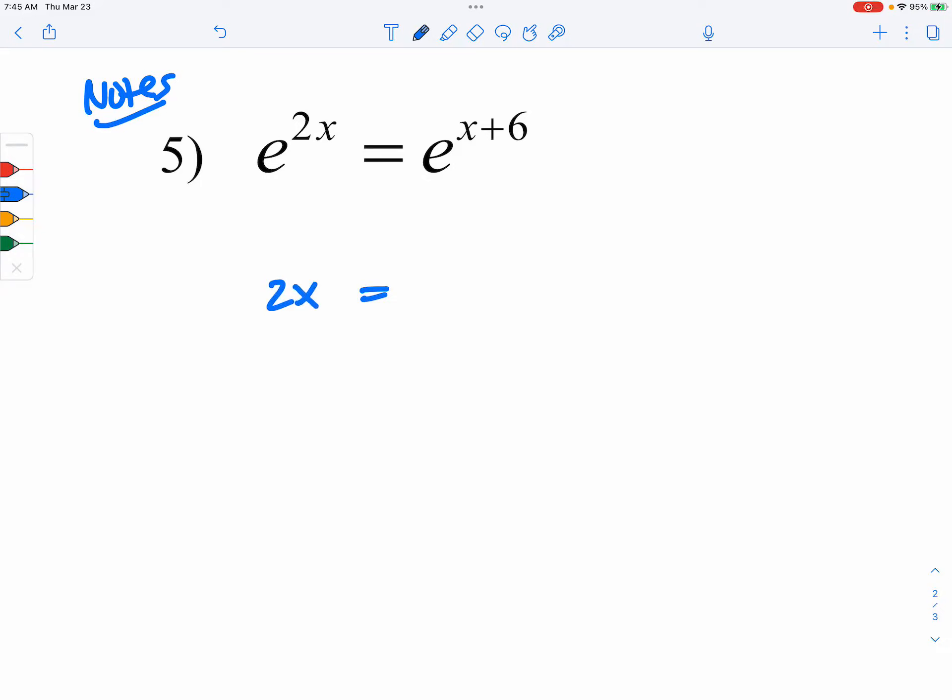So since they're both E to a certain power, and these two numbers are equal, that means the exponents must be equal to each other. So let's go ahead and subtract x on both sides, and you have the answer.